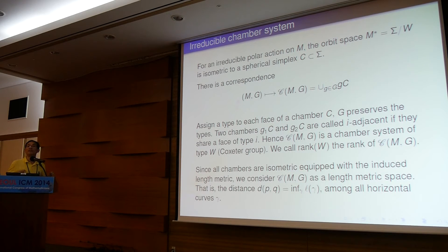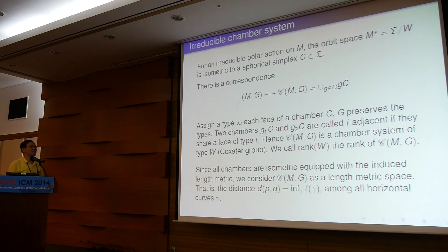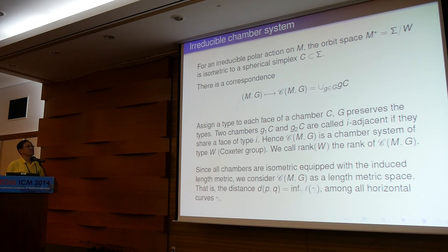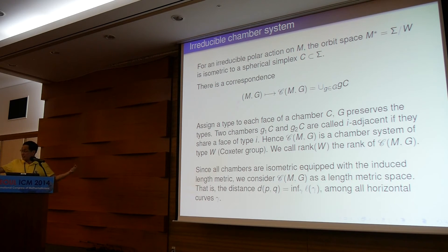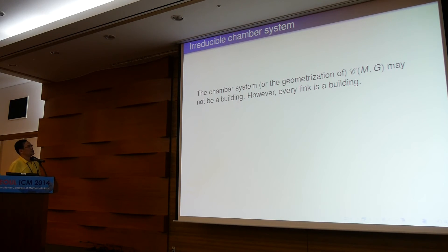We introduce a distance on this chamber complex, namely for two points in the set — since this complex C(M,T) equals your manifold M — define the distance to be the minimum over all horizontal curves gamma joining p and q, where gamma is always perpendicular to every orbit and tangential to the section Σ. This distance is very different from the original Riemannian distance, because the original geodesic distance may not be perpendicular to the orbit.